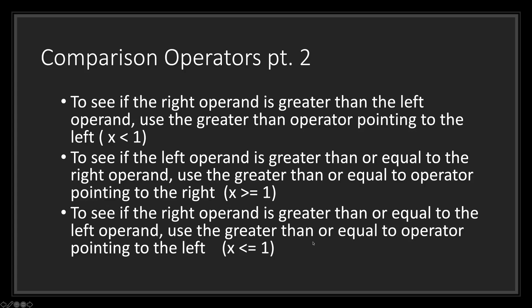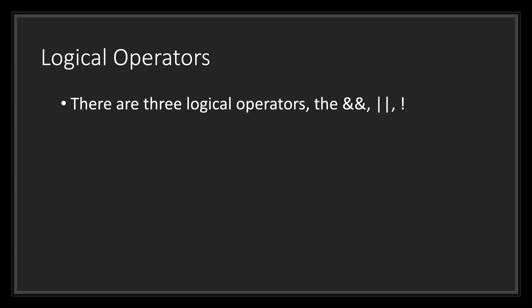To see if the right operand is greater than or equal to the left operand, use the greater than or equal to operator pointing to the left. We are using the left arrow symbol followed by an equal sign. What we are trying to say is if one, the operand on the right, is greater than or equal to the left operand x. If x is one or any number below one, then this operator will return true. However, if x is any number bigger than one, then this operator will return false.